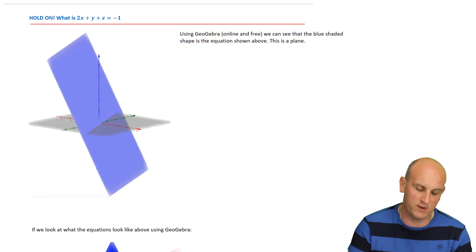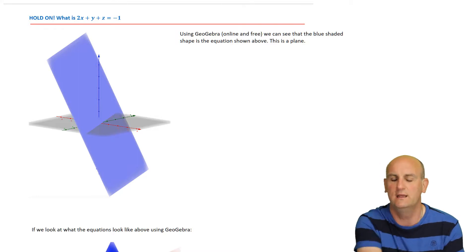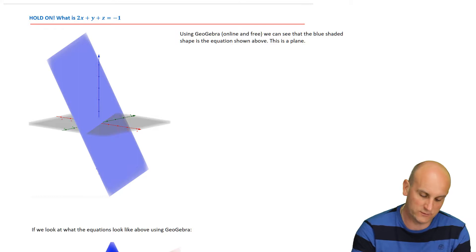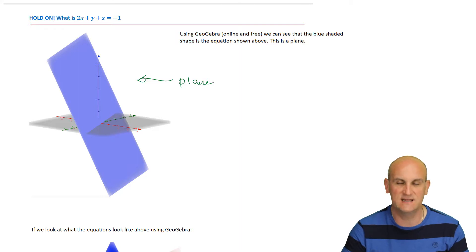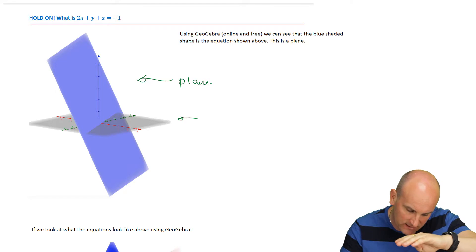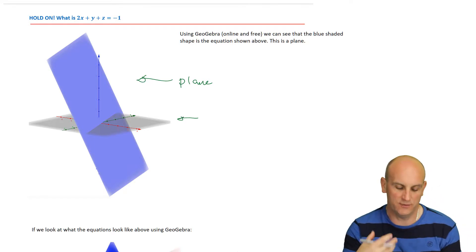Now, I said to you at the start, what on earth is 2x plus y plus z equals minus 1? Well, loading up my GeoGebra, which is a free online piece of software, I actually put that in and what came out was this thing here, which is a plane. So when we have two dimensions, we had the x and the y, it was a straight line, a two-dimensional thing. When we have a plane, it's a three-dimensional thing because we're looking at objects in three dimensions. And 2x plus y plus z equals minus 1 is actually the equation of a plane.